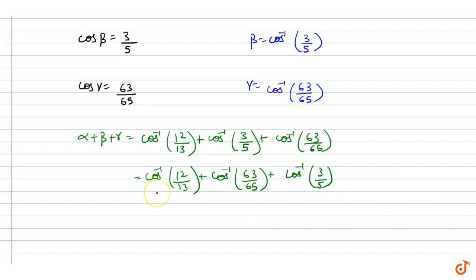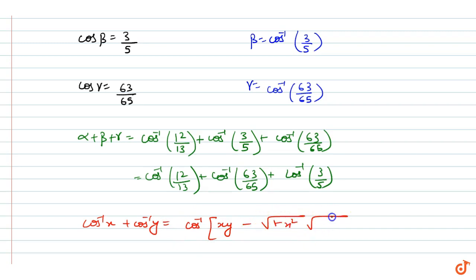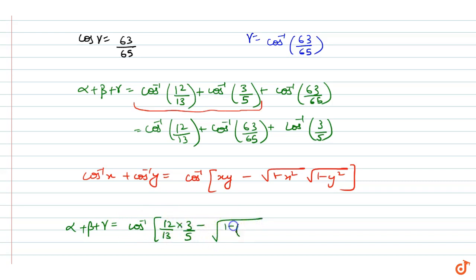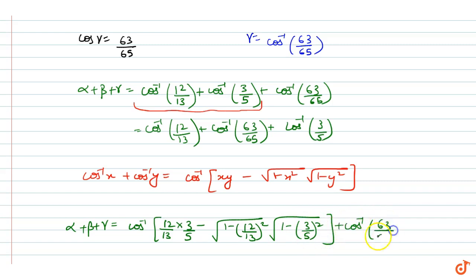We know the formula: cos⁻¹(x) + cos⁻¹(y) = cos⁻¹(xy − √(1 − x²)·√(1 − y²)). Applying this formula, we can find the value of α + β, and combining with γ we get cos⁻¹(36/65) + cos⁻¹(63/65).